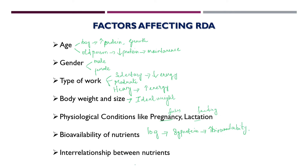The next factor is the interrelationship between nutrients — the presence of one nutrient may influence the absorption of another. For example, vitamin D increases the absorption of calcium, increasing its bioavailability, whereas the presence of zinc decreases the absorption of copper. These interactions are also taken into consideration while formulating RDA. These are all the major factors that affect RDA formulation.